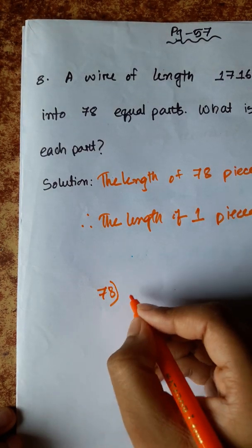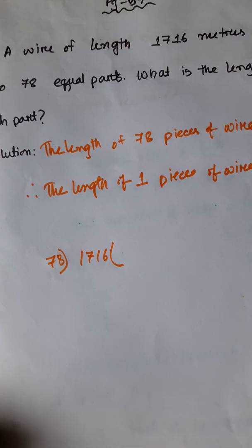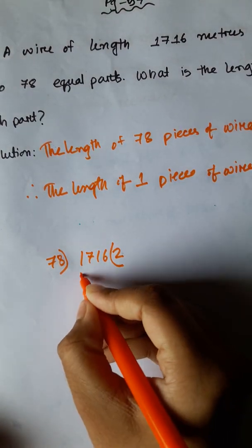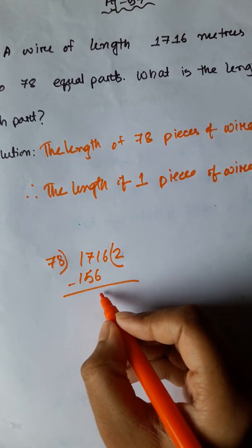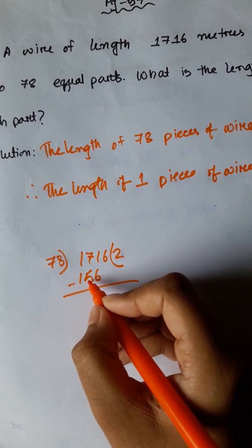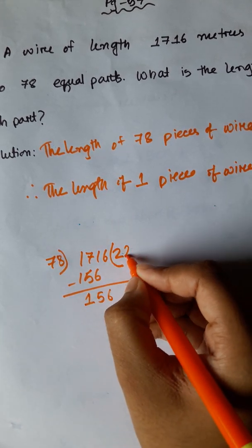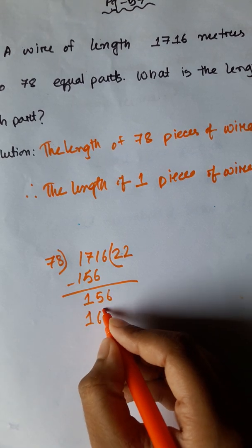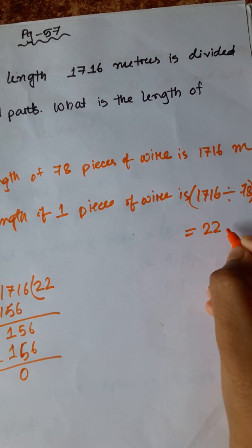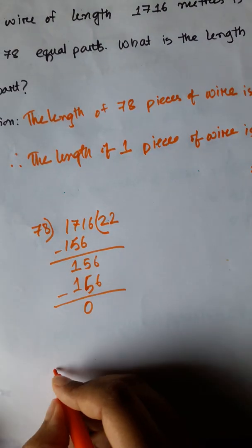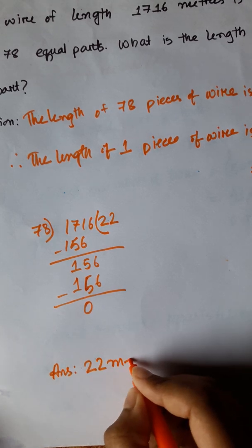78 divided into 1716: 78 times 2 is 156. So the answer is 22 meters.